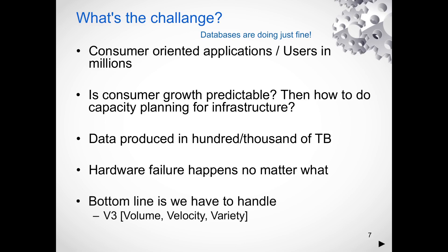3V is a very important acronym in the context of Cassandra: Volume, Velocity, and Variety of data. This concept has an impact on the way you model data in Cassandra. When I say how do you model in Cassandra, I mean how do you create a data model that is designed to handle volume, velocity, and variety of data.